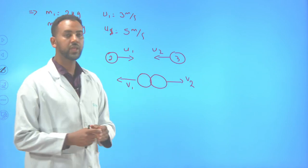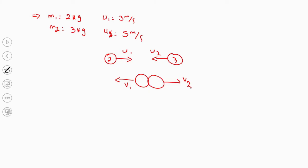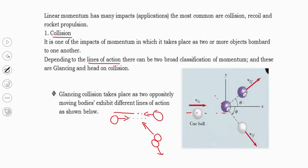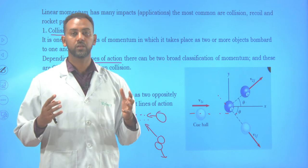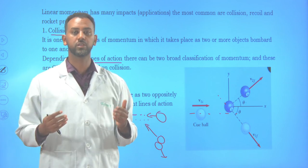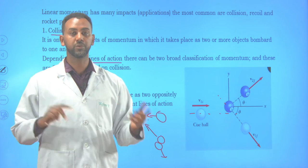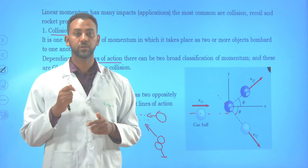The momentum always remains constant — keep that in mind. Next time we will see the different types of collision and solve more examples. So far, we have seen the different applications or impacts of momentum: collision, rocket propulsion, and recoil. We mainly focused on collision, which is classified into head-on collision — where lines of action remain constant before and after — and glancing collision — where the lines of action differ.